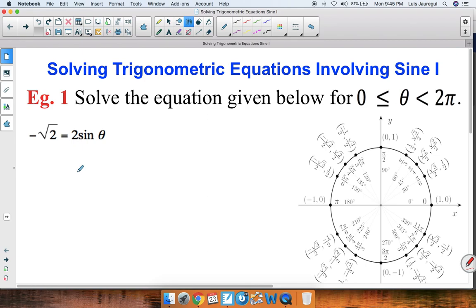Solve the equation given below for theta greater than or equal to 0 but less than 2π. We're given the equation negative square root of 2 equals 2 times sine of theta.